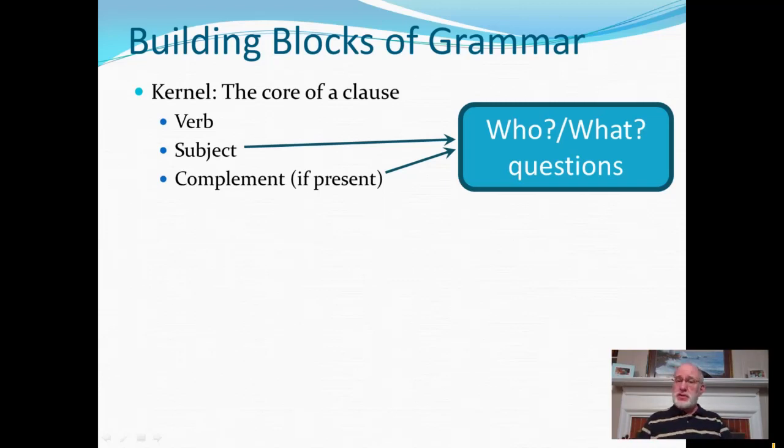There are lots of other questions that various sentence elements can answer. When, why, how long, for whose benefit, for what reason, with what motive, lots and lots of other kinds of questions can be asked, but when you've got the verb in focus, whatever answers the question who or what in front of that verb is the subject of the verb, and whatever answers the question who or what after the verb is the complement.